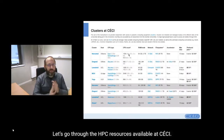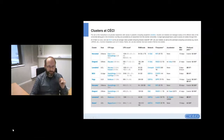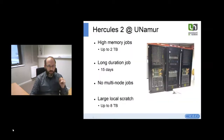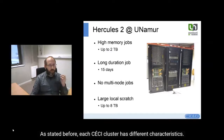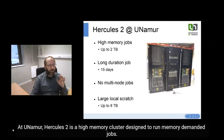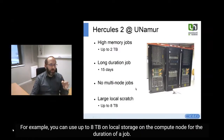Let's go through the HPC resources available at CECI. We can see a summary of all clusters displayed on the CECI webpage. Each CECI cluster has different characteristics. For example, Hercules 2 is a high-memory cluster designed to run memory-intensive jobs. Also, the storage configuration has been adapted to cope with jobs that generate or consume a large amount of data — you can use up to 8 TB of local storage on the compute node for the duration of your job.